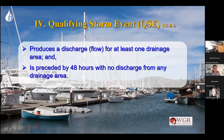Qualifying Storm Event — this is a big one. A qualifying event must produce flow from at least one drainage area. Back in 2017, the water board defined this as flow from any outfall or any point of discharge. If you have water leaving your property, it has to have enough flow to be able to collect a sample. If the water comes out and just barely trickles along the side and you can't get a sample bottle in there to actually collect flow because it's so minimal, that's not a qualifying discharge — it has to be enough for you to actually have flow.